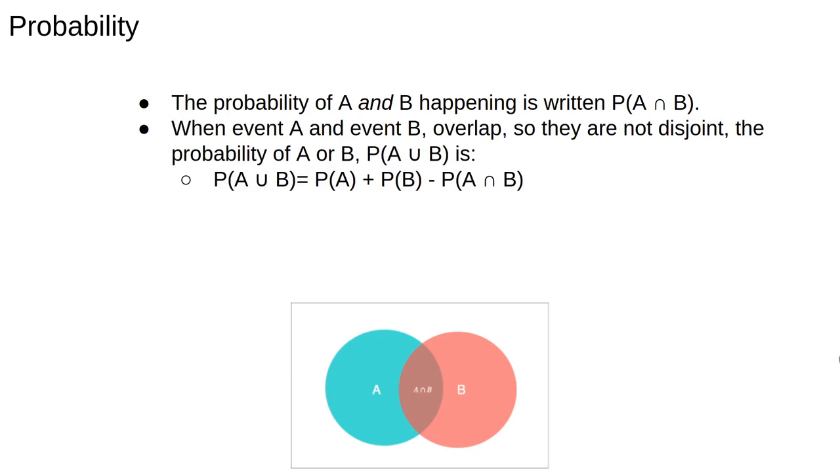So the Venn diagram is pretty clear, but just to spell it out, when the event A and the event B overlap, they have elements in common, so they're not disjoint. In this case, the probability of A or B happening is given by the equation P(A ∪ B) = P(A) + P(B) - P(A ∩ B). That is, we add the probabilities of A and B and subtract off the intersection to avoid double counting.